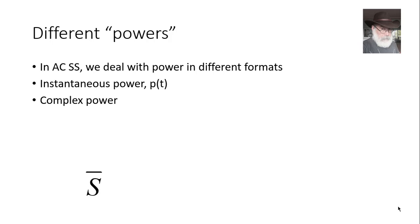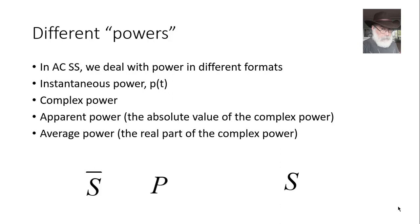We deal with power in different formats. Instantaneous power, p(t), complex power S with a hat, apparent power which is the absolute value of the complex power S without a hat, average power that we also call the active power, that is the real part of the complex power, and reactive power Q, which is the imaginary part of the complex power.